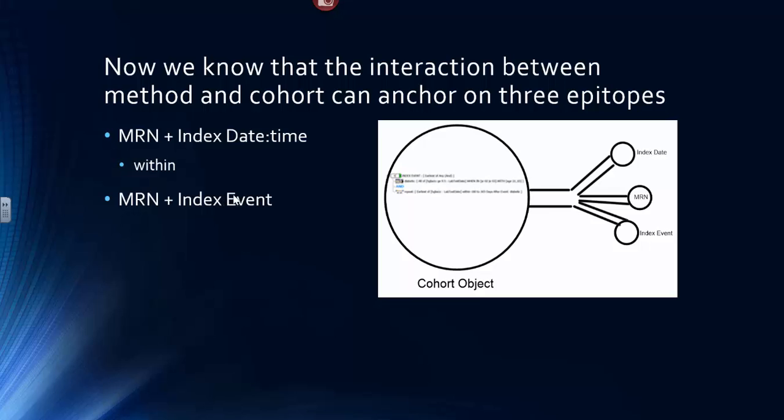If you use the medical record number and Index Event, this would be a situation where you have a method that's using a when in duration. That is, the method is looking during the duration of this patient's durational event, during this patient's hospitalization, for example.